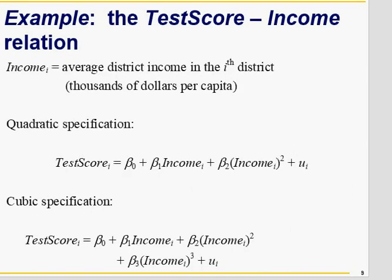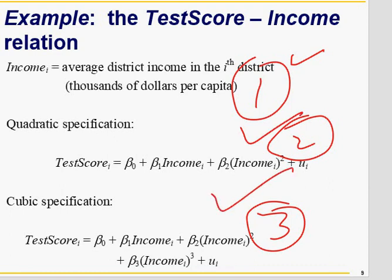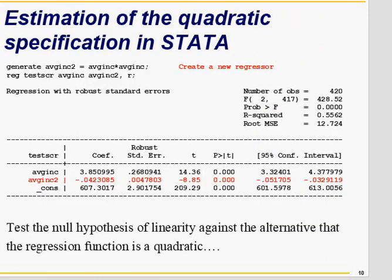Consider a model where test score is a function of income. One option is a linear model, another is a quadratic model, and another is a cubic model. You can compare which provides the best fit. If you create an average income squared variable and it turns out to be significant, it means that a significant variable was being ignored in the linear model.